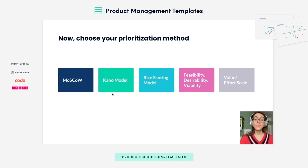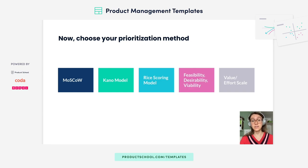The five frameworks are: Moscow, Kano, RICE scoring, feasibility, desirability, viability, and value/effort. To do this exercise, you're going to start with a project that has a list of features that you would like to prioritize. We suggest that for each project, you only choose one of these prioritization methods to use.